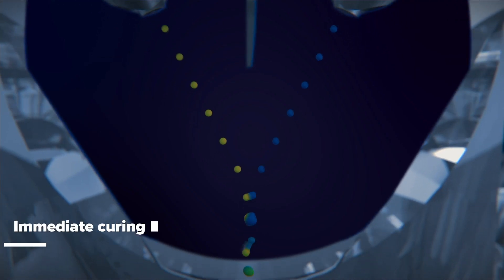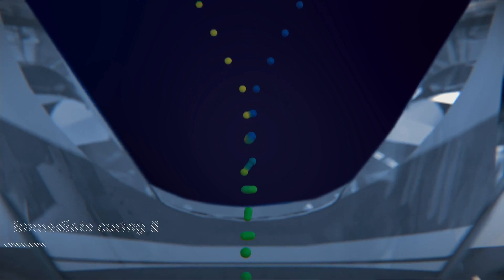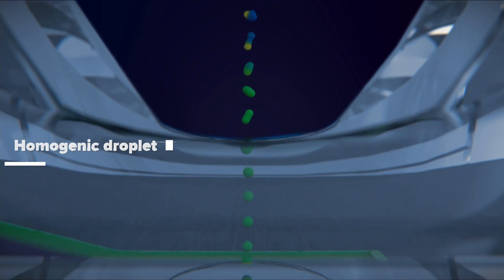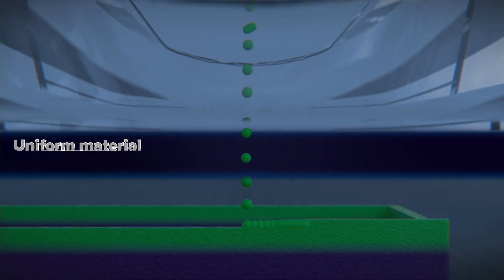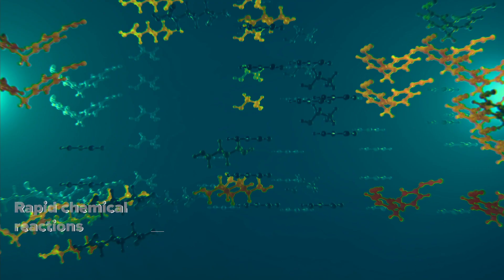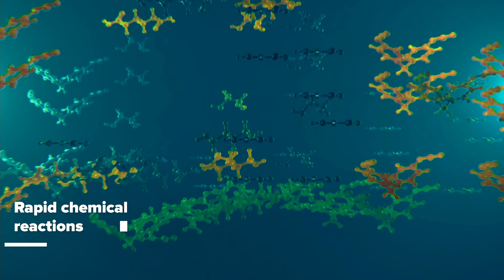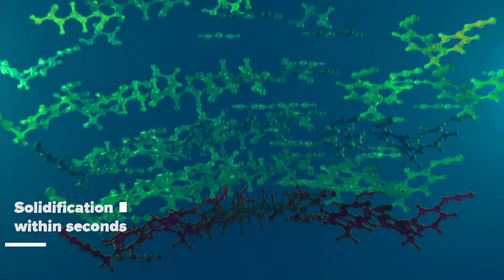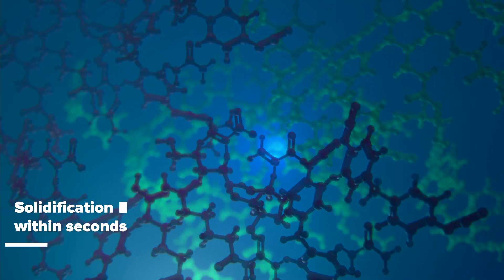The reactive inks start curing immediately after being mixed. The combined droplet is homogenic which ensures that uniform material is obtained. The rapid chemical reactions occurring within the combined droplet result in gelling and subsequent solidification of the material within seconds.